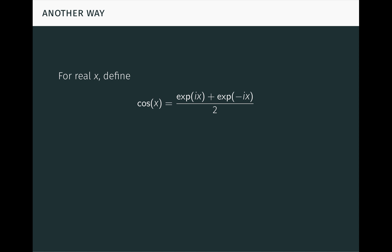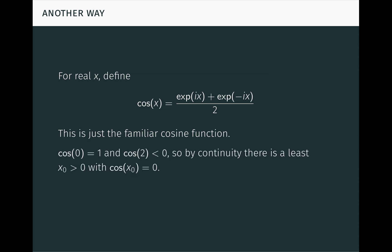For real numbers x, we can define another function, cosine of x, in terms of the complex exponential function. Here i is just the principal square root of minus 1. This is just the familiar cosine function from trigonometry. By looking at the infinite series, we can see that cosine of 0 is 1, which is positive, and cosine of 2 is negative. So, by continuity, which can also be established by looking at the infinite series, there has to be a least positive number x0, with cosine of x0 equal to 0.